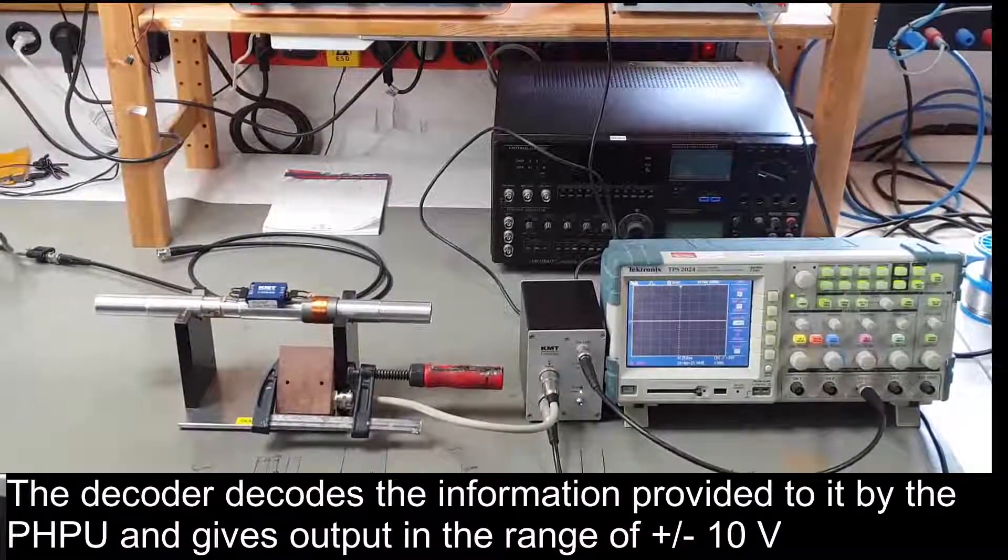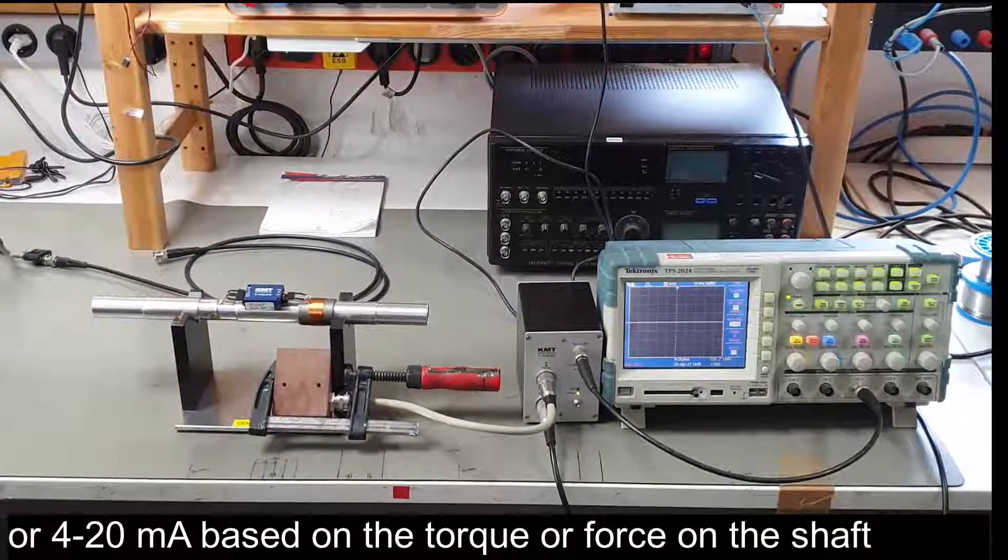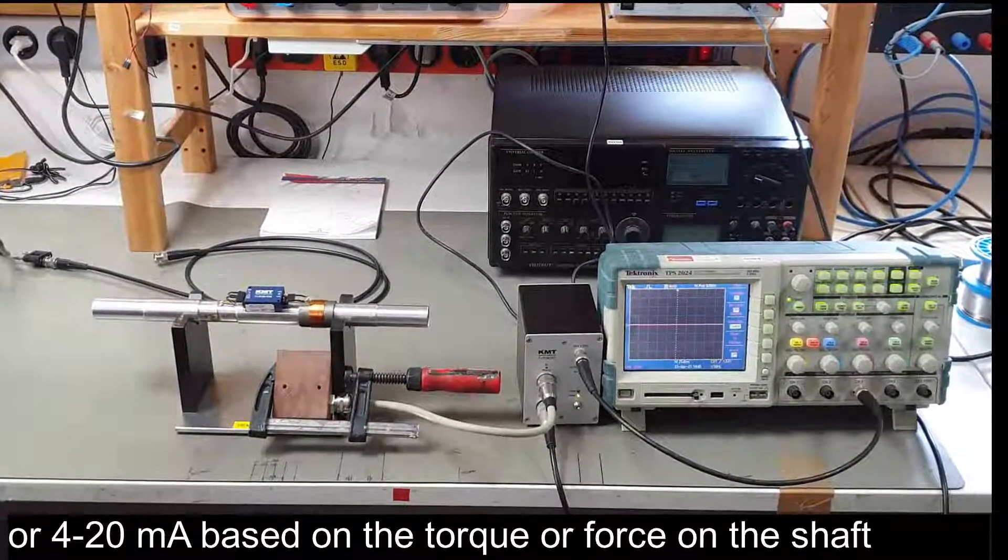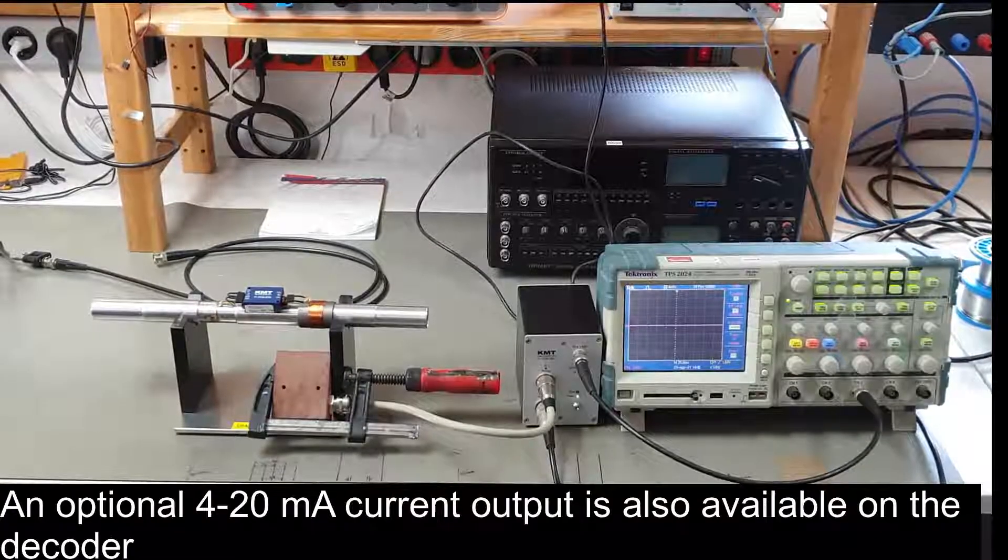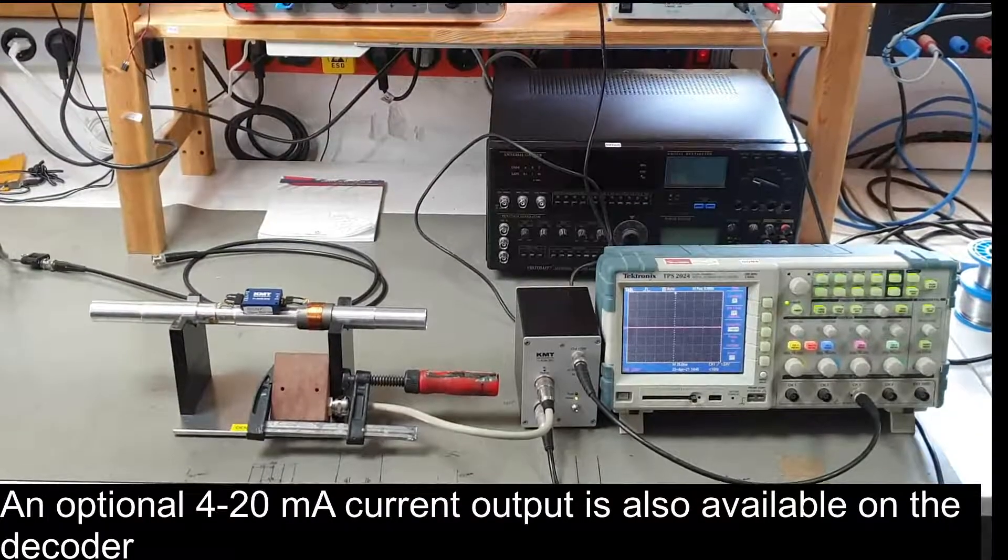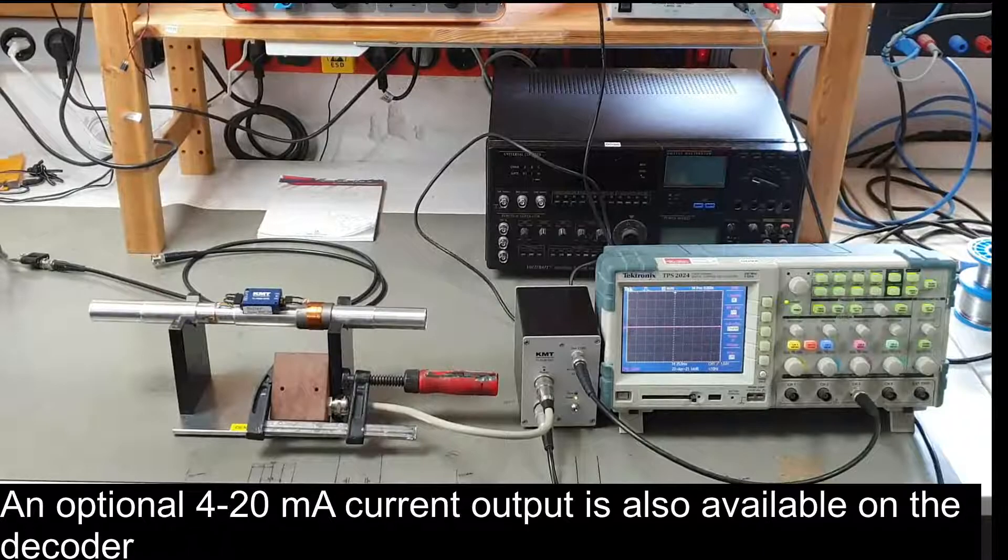The decoder decodes the information provided by the PSPU and gives output in the range of plus/minus 10 volts or 4 to 20 milliampere based on the torque or force on the shaft. An optional 4-20 mA current output is also available on the decoder.